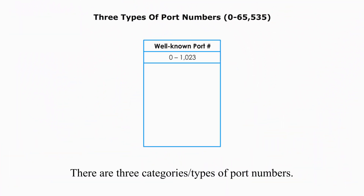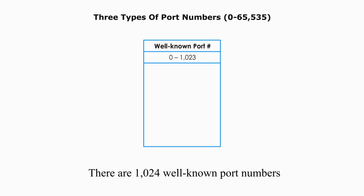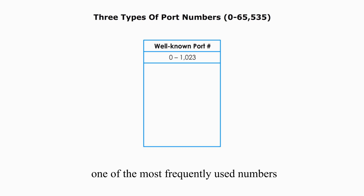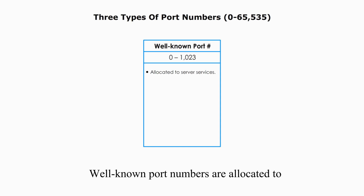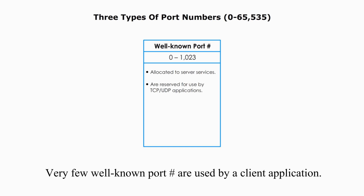There are three categories of port numbers. The first category is called well-known port numbers. There are 1,024 well-known port numbers from 0 to 1023. 2 to the 10th power is 1024, one of the most frequently used numbers in the computer networking field. Well-known port numbers are allocated to a server and reserved for use by TCP and UDP applications. Very few well-known port numbers are used by a client application.